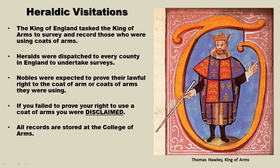Here is how the process worked. The herald would announce his presence in a particular county. The bailiffs would then notify the nobles, or anyone using a coat of arms, to appear before that herald at a particular place — usually at an inn, but sometimes the herald would visit the noble at his manor or castle. These heralds had great authority; any decision they made was final, and there was absolutely no right of appeal. The herald would have been accompanied by a staff, including scribes and draftsmen, who would draw the coat of arms to keep a permanent record.